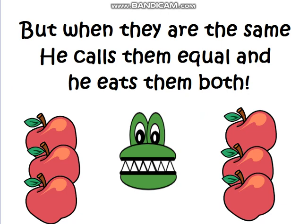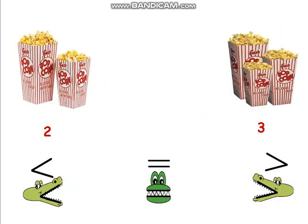Now this alligator sees the same number of apples on both sides. Because they are the same, he is going to eat them both. He is confused — he can't choose this or that, so he decides to eat both.